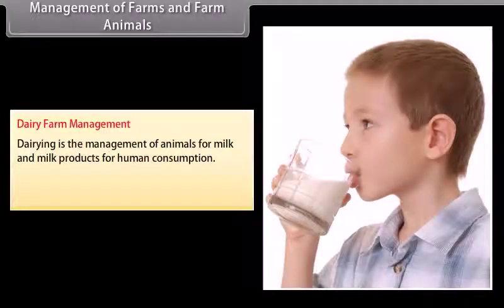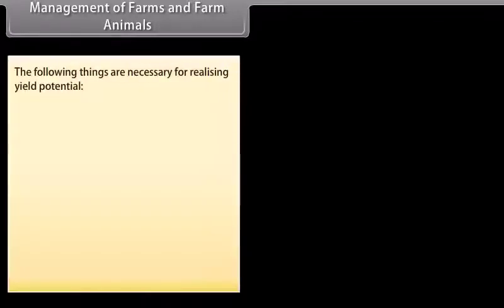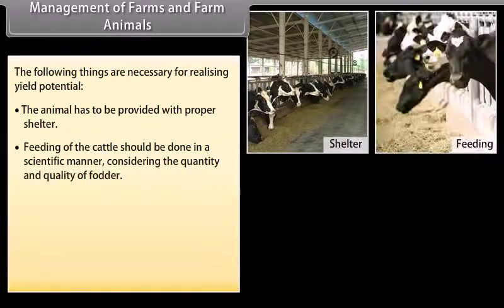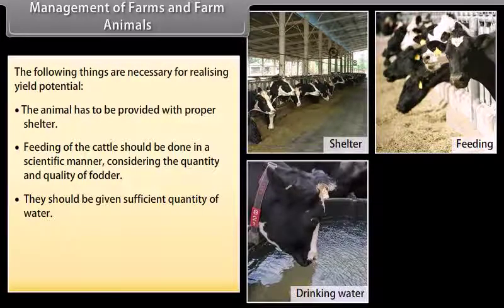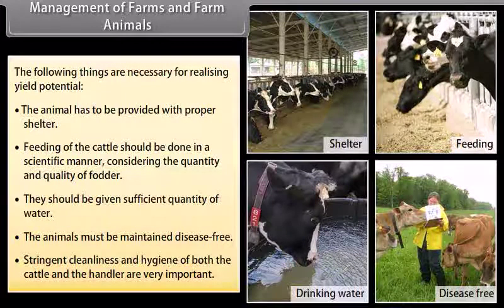Dairy farm management: Dairy is the management of animals for milk and milk products for human consumption. Milk yield is dependent primarily on the quality of breed. The following things are necessary for realizing yield production: the animal has to be provided with proper shelter, feeding of the cattle should be done in a scientific manner considering the quantity and quality of fodder, and they should be given sufficient quantity of water.